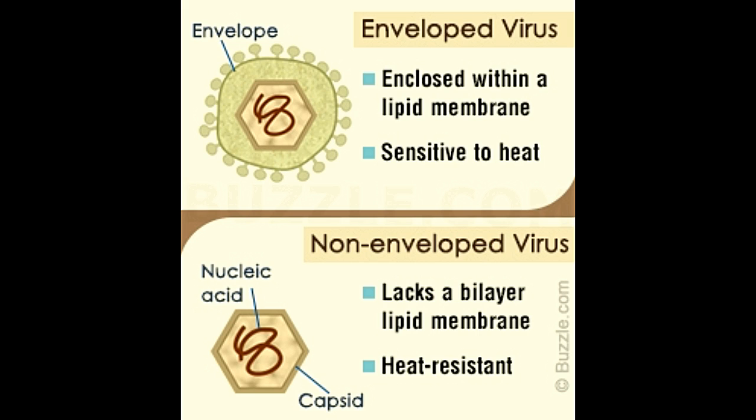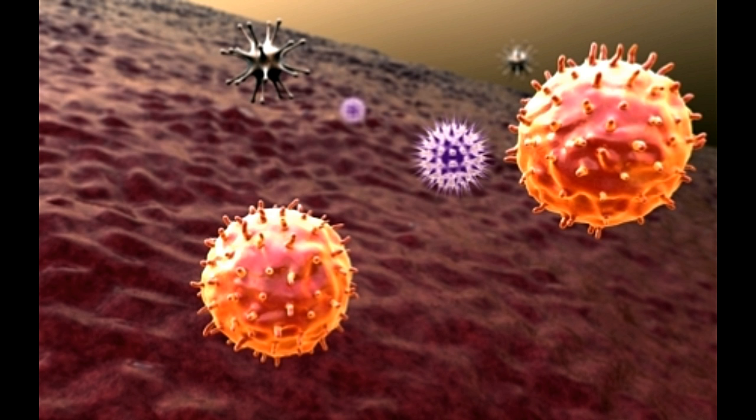Some enveloped viruses have spikes that protrude from the envelope surface. A virus is a microscopic organism capable of causing serious infections. Presently, over 5,000 species of viruses have been identified. They are 10 to 100 times smaller than bacteria, and so cannot be viewed without an optical microscope.